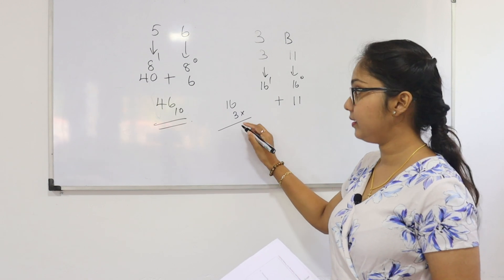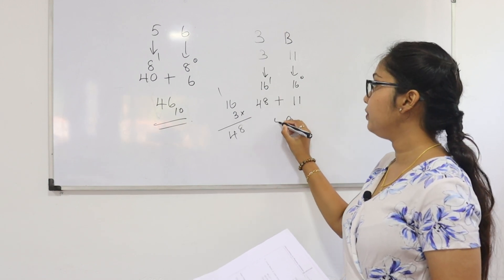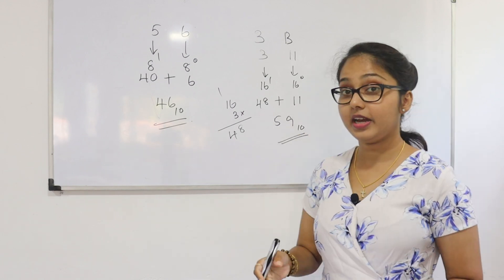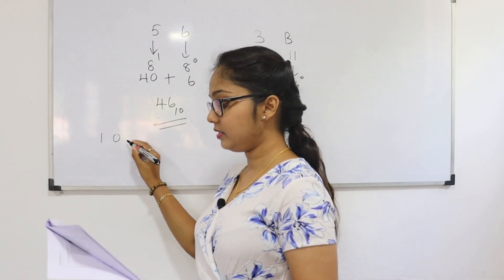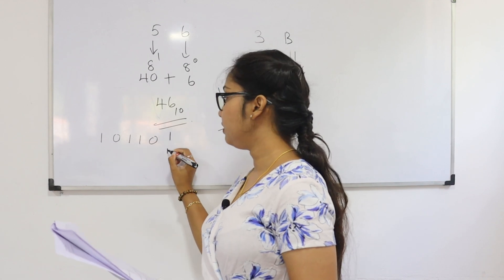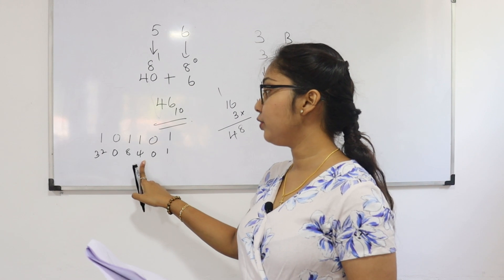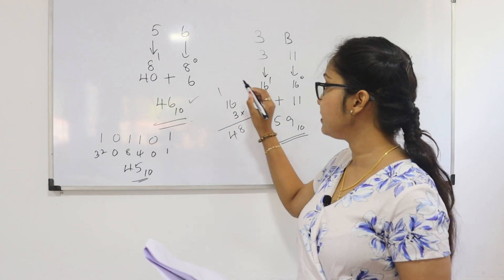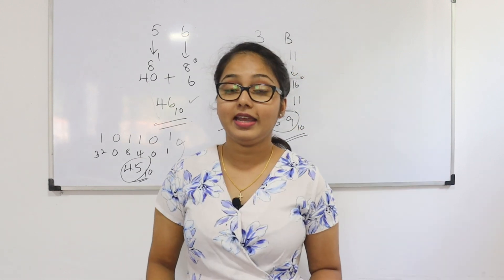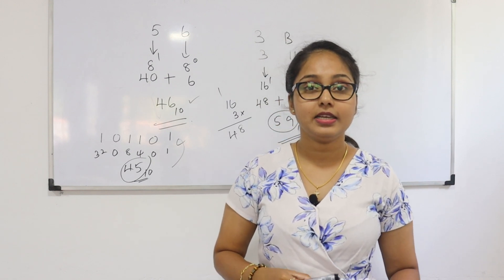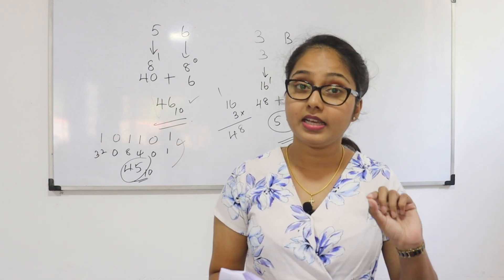Continuing the number conversions: 48 + 11 = 59. Working through binary representations — 10110001 — using positional values 1, 4, 8, 32: 32 + 8 = 40, + 4 = 44, + 1 = 45. Comparing values 46, 59, 45, and 49 — the answer comes out to 49.